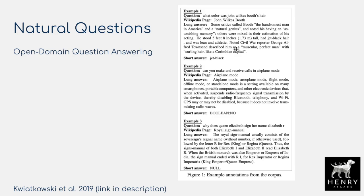The Natural Questions dataset is an open-domain question answering task where you have questions about topics like John Wilkes Booth, airplane mode, or the royal sign manual, and you have to generate the answer. Many previous approaches treat this as a classification problem — as in the SQuAD extractive question answering task, where the model classifies where in a fetched passage the answer is, outputting something like indexes 10 through 15. In contrast, these text-input text-output models generate the answer rather than classify its position in the context span.